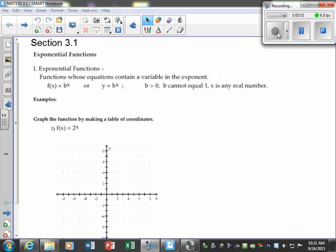Section 3.1, we're going to do exponential functions, and basically those are functions whose equations contain a variable in the exponent. So f of x is equal to b to the x, or recall we say f of x is the same thing as saying y equals b to the x, where b has to be greater than zero and cannot equal one, and x is any real number. So let's just see a few examples of those.